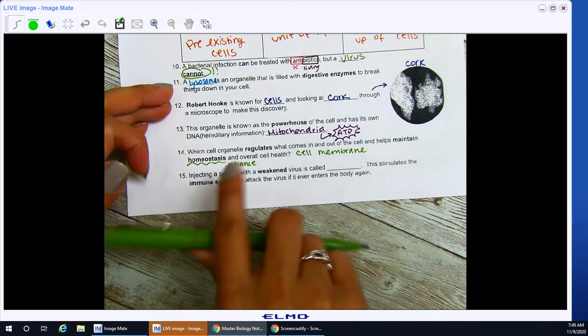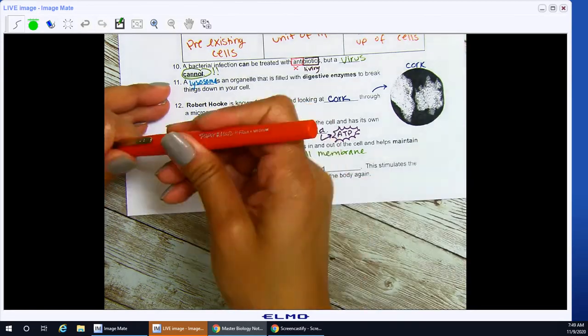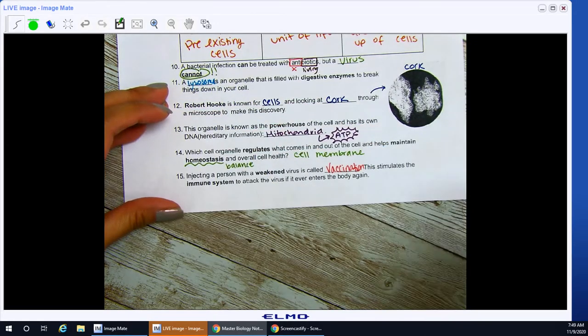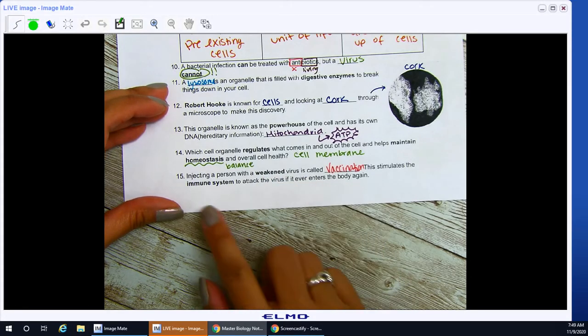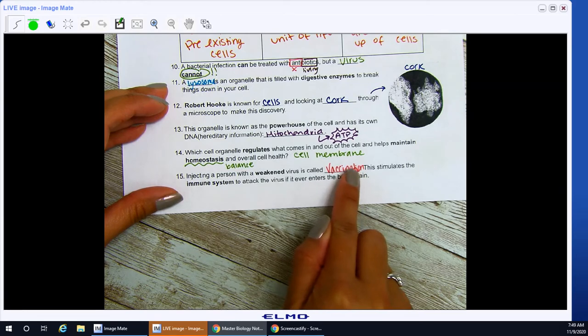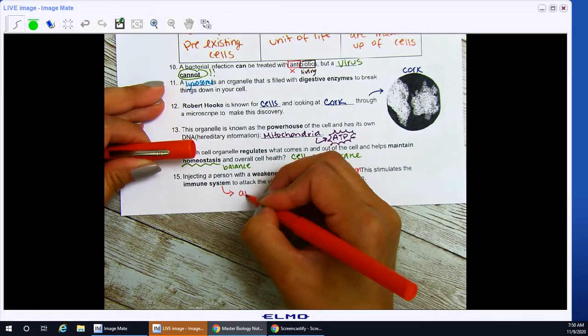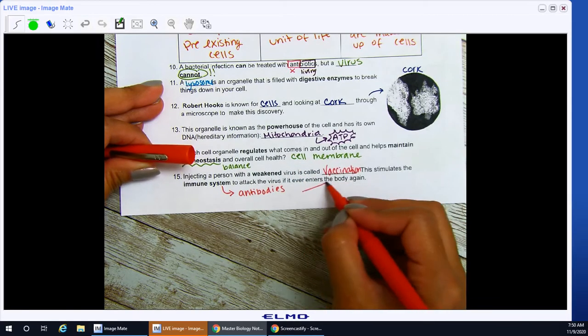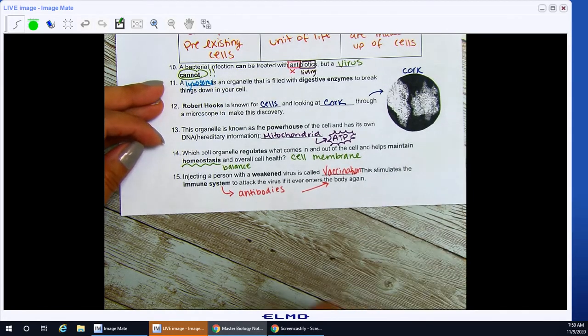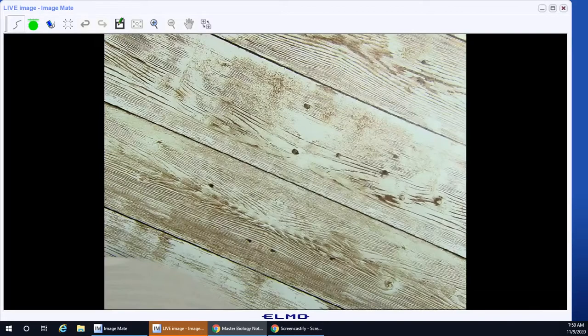15, injecting a person with a weakened virus is called a blink, or called blink. This stimulates the immune system to attack the virus if it ever enters the body again. This is vaccination. Okay, remember that vaccines. Vaccines are you receiving a weakened form of your virus, and that is what's going to tell your immune system, hey, immune system, here, take these proteins from the weakened virus, from the vaccine, and create antibodies. Okay, make me some antibodies, please. So if I ever see it again, I can fight it quickly to where I do not experience those symptoms again, or it helps me overcome that illness way faster than my first time, my initial time becoming infected or becoming sick with that pathogen.